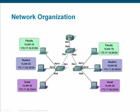Another benefit of VLANs is network organization. Think about a school, for example. It makes sense for there to be three VLANs: a student VLAN, a faculty VLAN, and perhaps a guest VLAN for visitors that may need Internet access. This is shown here. Notice that each VLAN has its own subnet address.